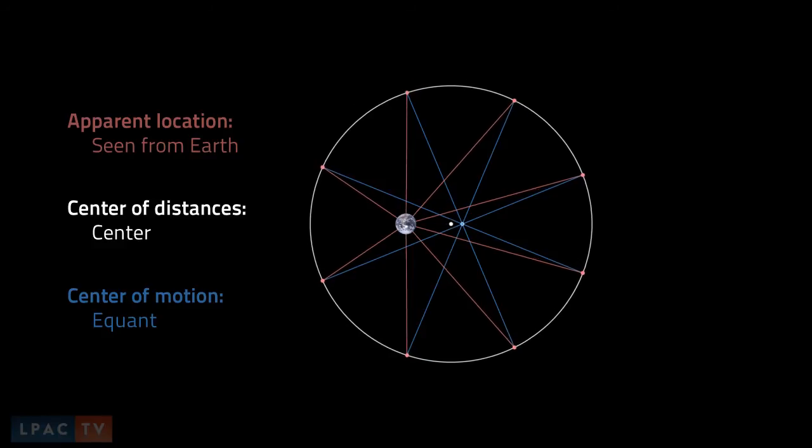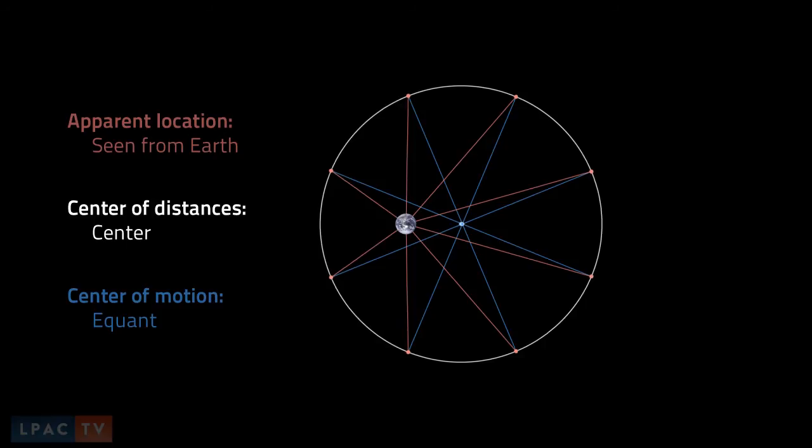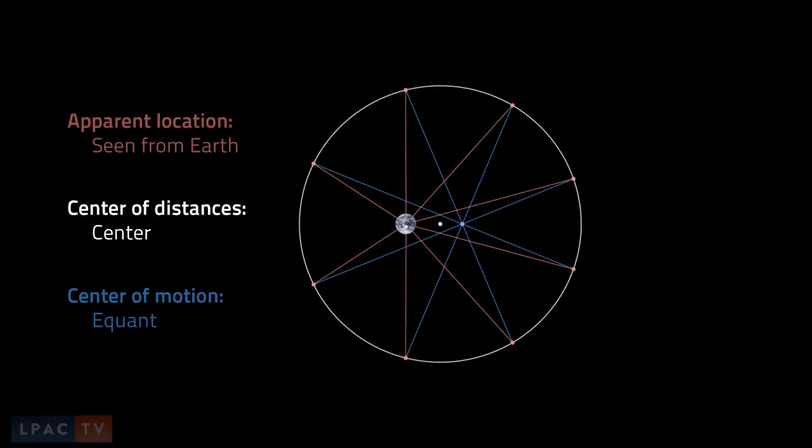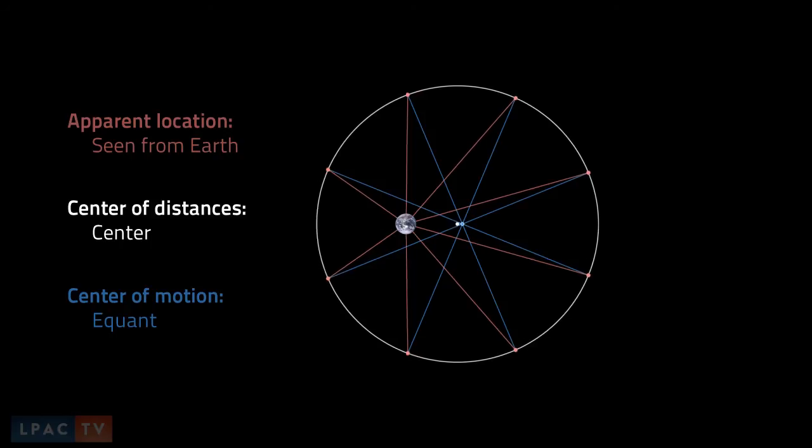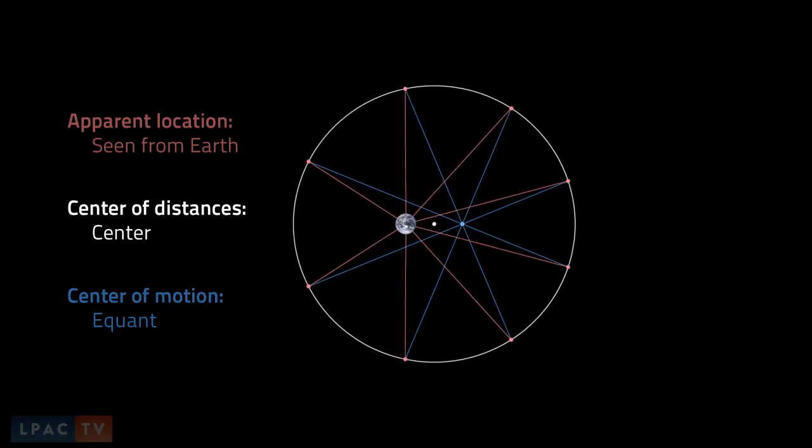Let's watch this transition a few times. The angles of the blue lines from the equant remain 45 degrees apart, but the planetary positions change as the white circle they are on moves, which then changes where they appear to be as the Earth watches them.